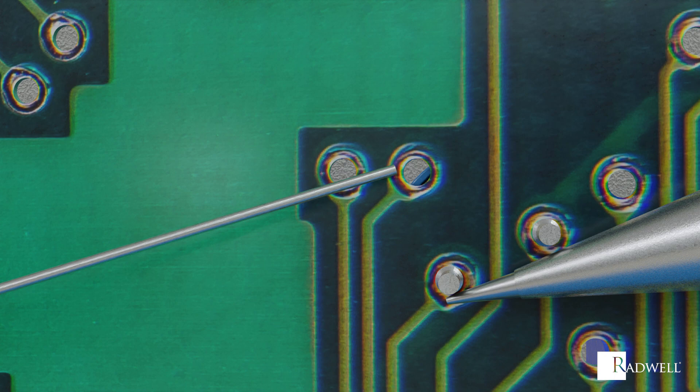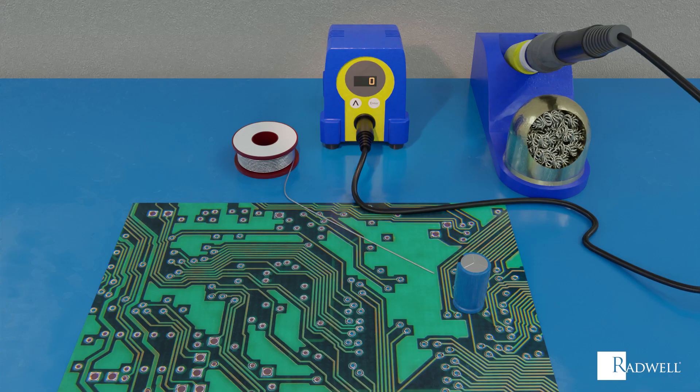A good joint will be in the shape of a cone or volcano. Allow the solder to cool on its own and trim the leads from the component.